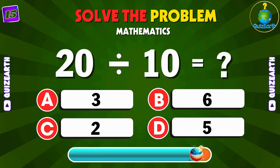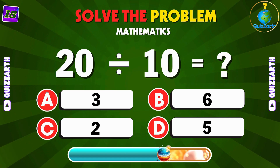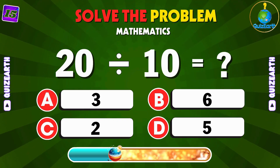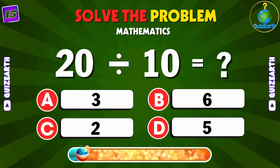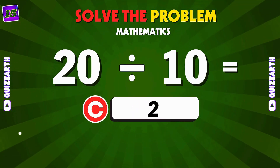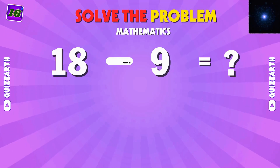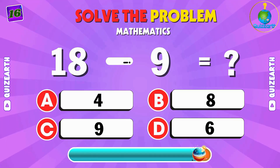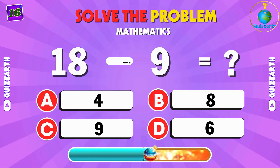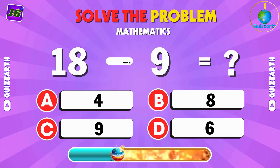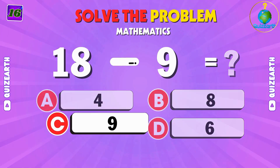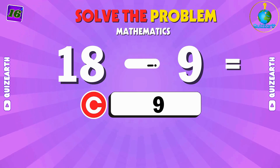Divide 20 by 10 — what's the answer? Easy peasy. C: 2. Let's subtract 9 from 18 — what's the result? Give it a shot. C: 9.